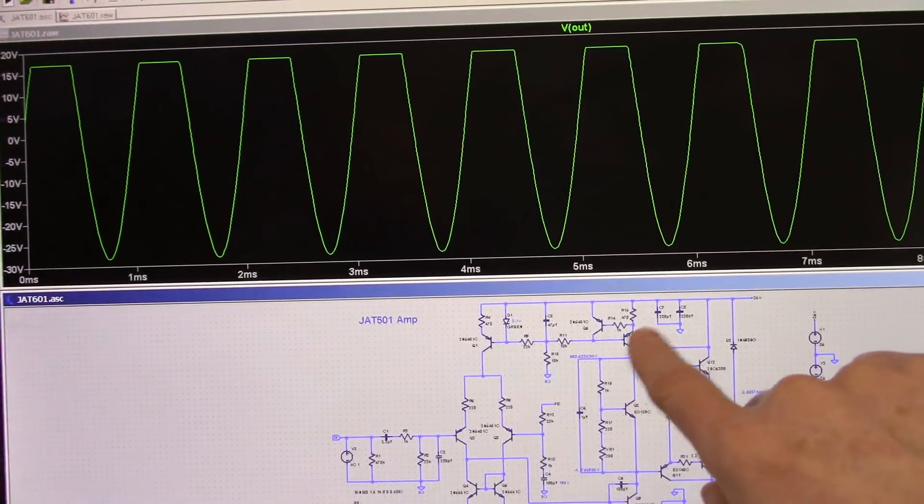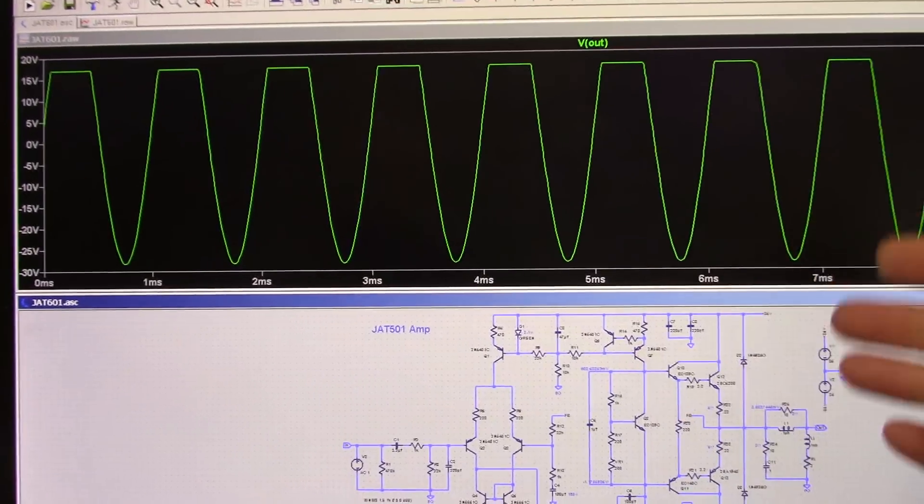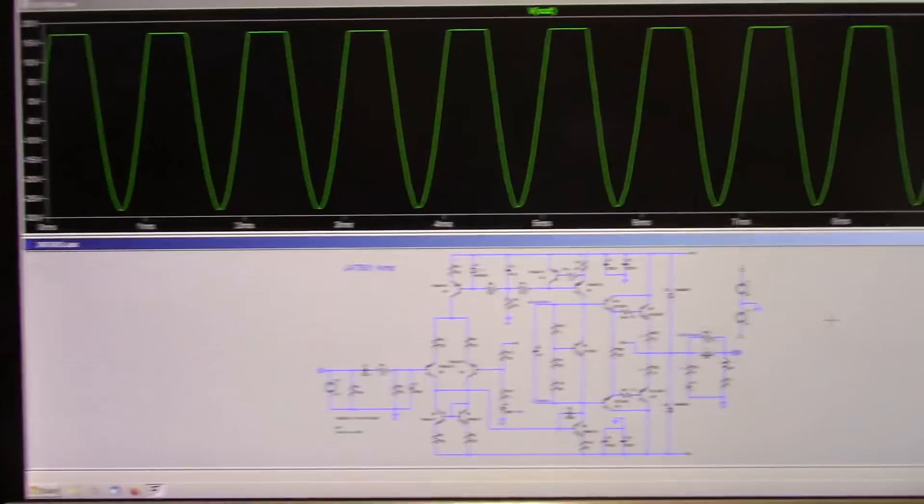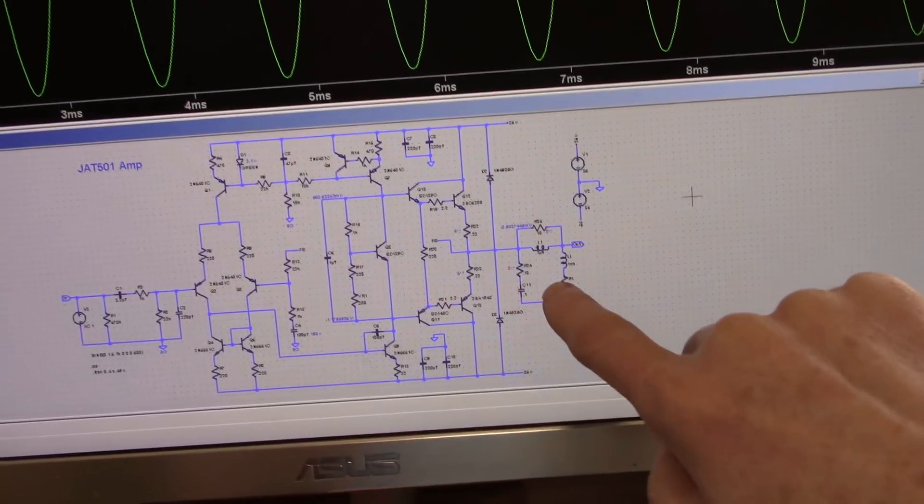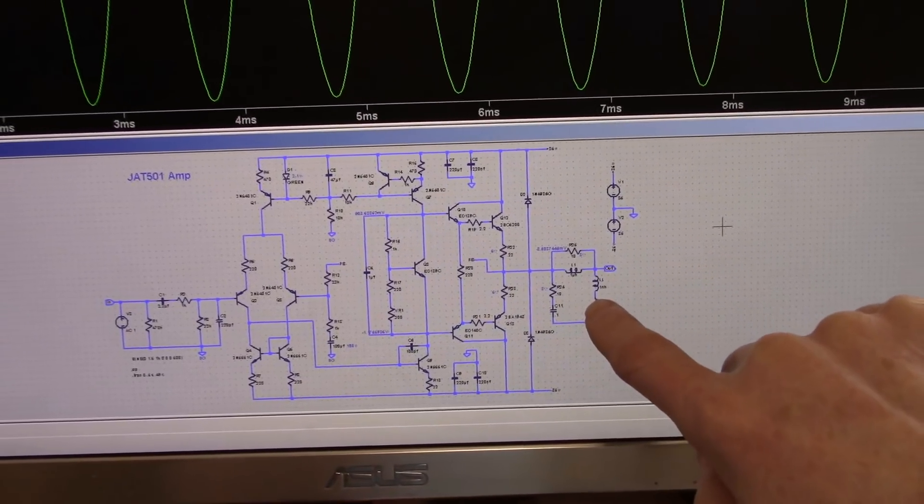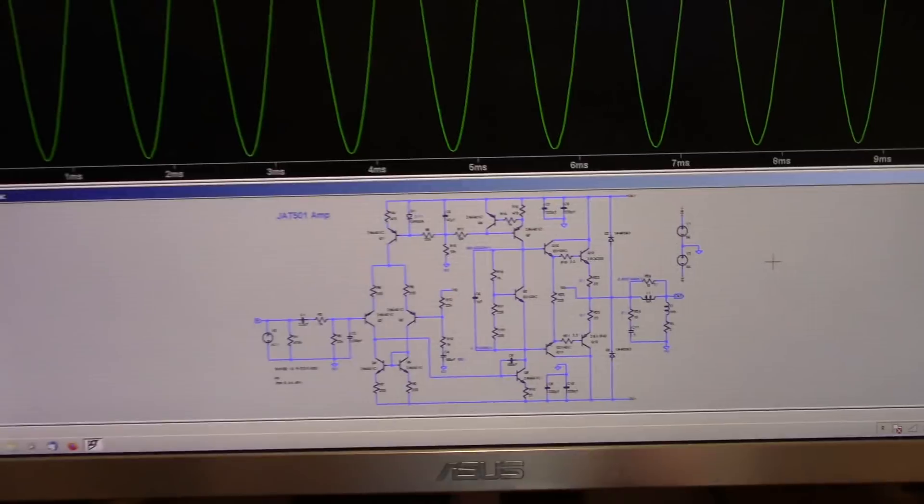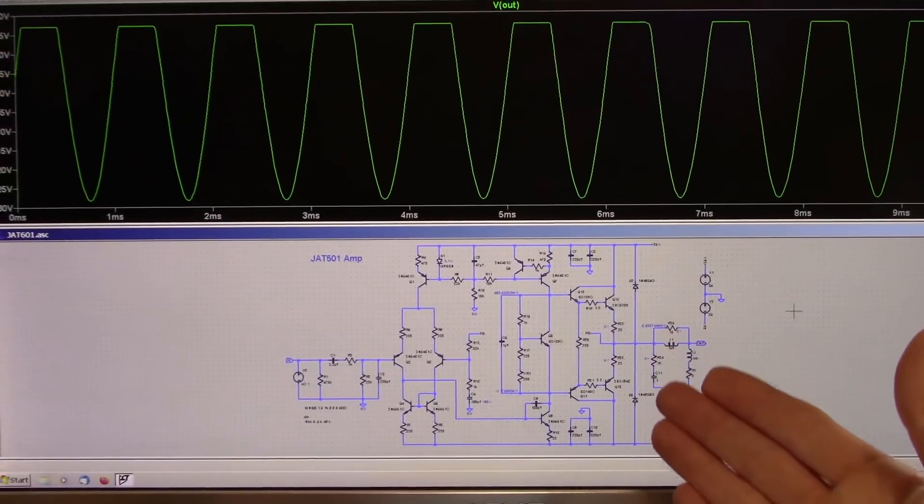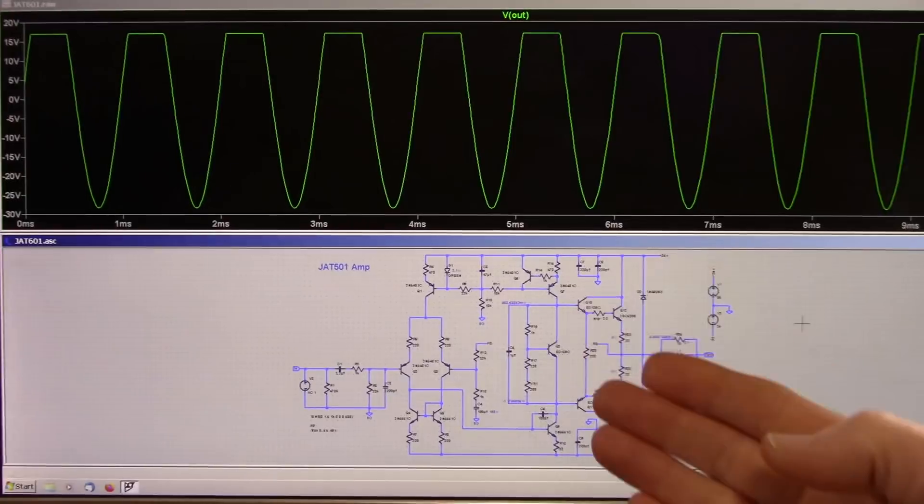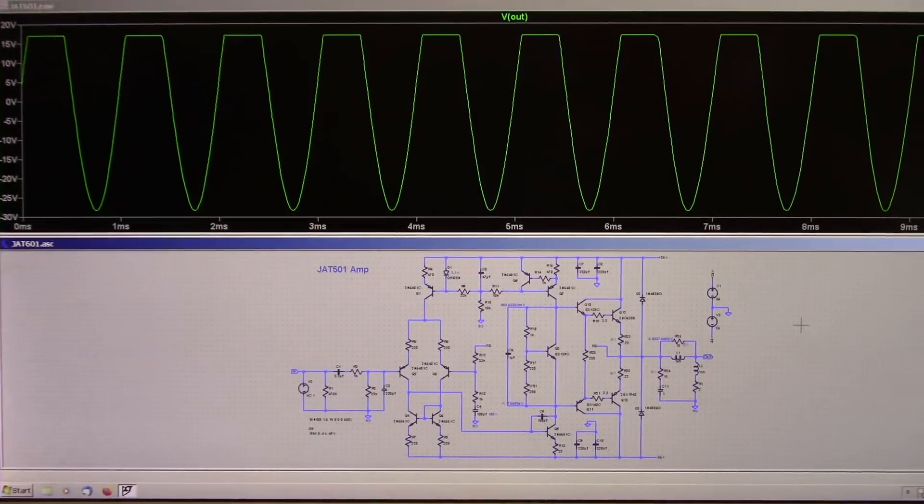So if I set that back to the original value, we'll have good symmetrical clipping again. So I know this amplifier can deliver plenty of current even with a 2 ohm load. Again, I'm not saying you can run the amplifier at 2 ohms. It's just my criteria for testing the amplifier.